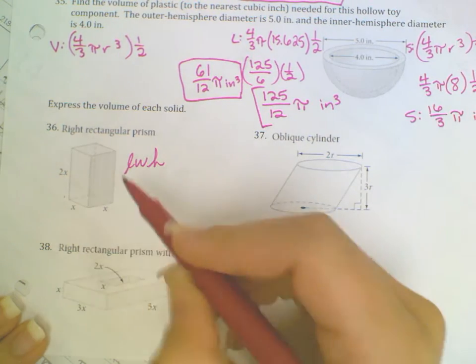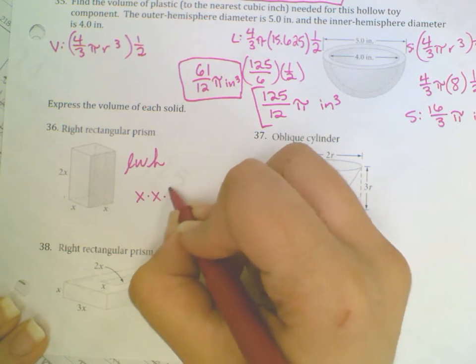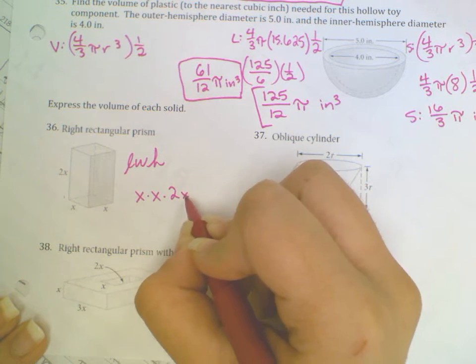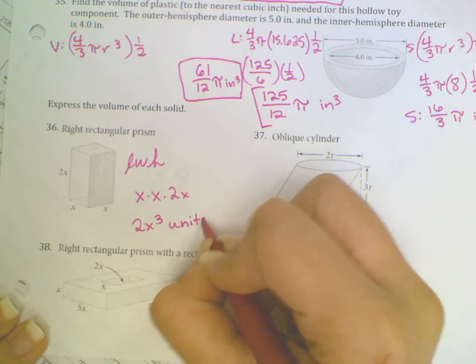So if I do x times x, I get x squared. So x times x times 2x. x times x is x squared, times 2x gives me 2x cubed units cubed.